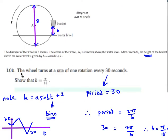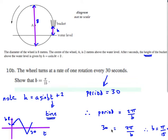Next: the wheel turns at a rate of one rotation every 30 seconds. Show that B equals π/15. Note the function we've been given: H = A sin(Bt) + 2, where H is the height and T is the time. They've told us the rotation period is every 30 seconds. Therefore the period is 30 seconds. We just plug this into our usual period formula: Period = 2π/B. Remember, always use radians unless told otherwise. So 30 = 2π/B, which gives B = π/15.